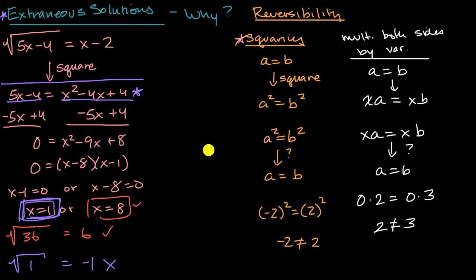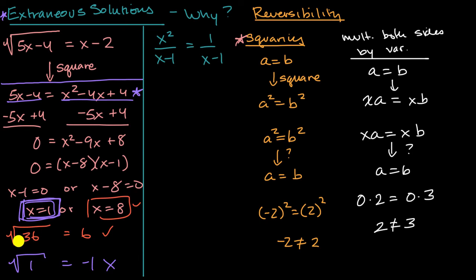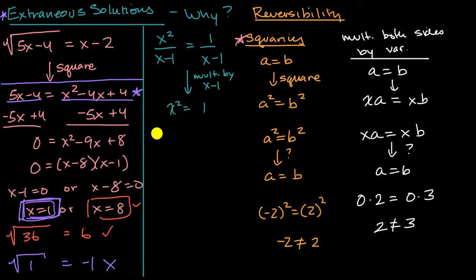We could do the same thing with an equation that deals with rational expressions. For example, if I had to solve x squared over x minus one equals one over x minus one, the first thing I might want to do is multiply both sides by x minus one. Multiplying both sides by x minus one, I get x squared equals one, or x equals one or x equals negative one. But testing x equals one in the original equation, I'm dividing by zero on both sides — so this is an extraneous solution.